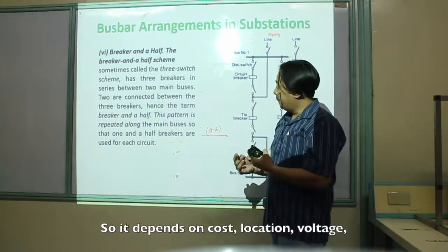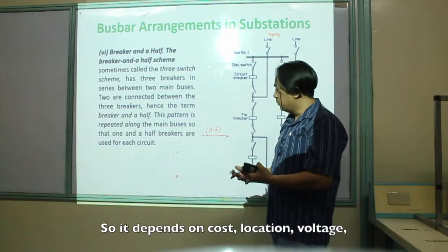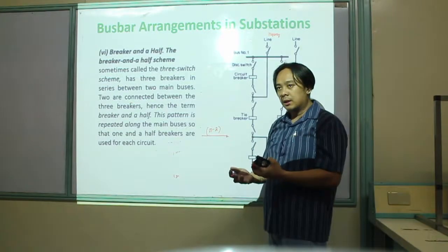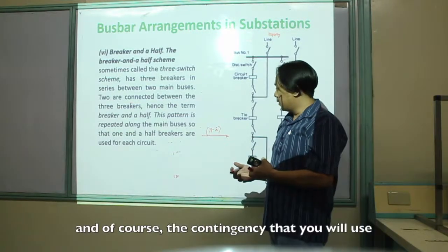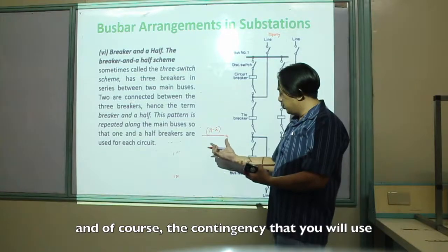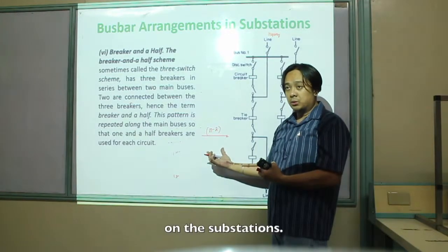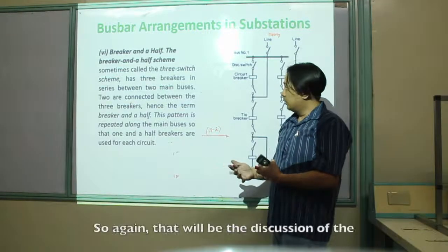The selection of bus bar arrangement depends on cost, location, voltage, and the contingency level used in the substation. That concludes our discussion on bus bar arrangements.